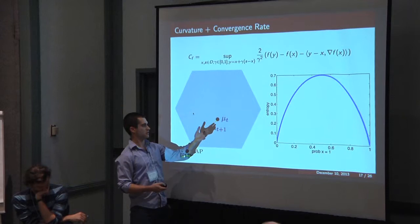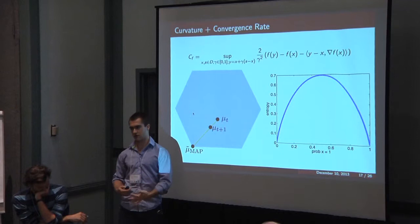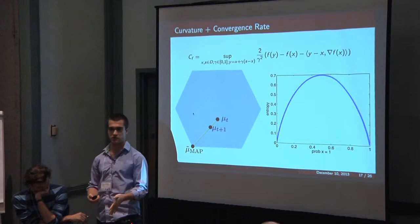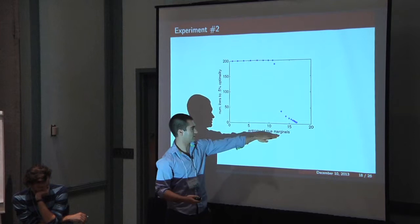I made a hypothesis that basically the distance of the true target from the boundary would dictate how fast you converge. One surrogate for how far you are from the boundary is the entropy of the true target marginals.